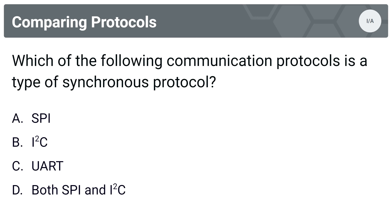Next question: which of the following communication protocols is a synchronous protocol? Options are A, SPI; B, I2C; C, UART; or D, both SPI and I2C. Remember that UART is asynchronous — it's in the name: Universal Asynchronous Receiver Transmitter. That crosses out UART. I2C and SPI both have clock signals, so they must be synchronized. The answer is D, both SPI and I2C.